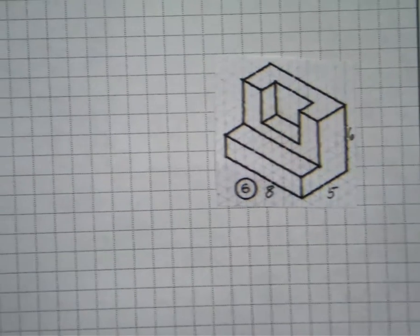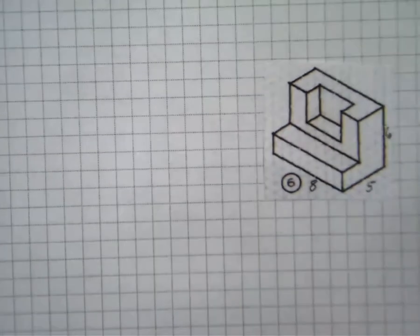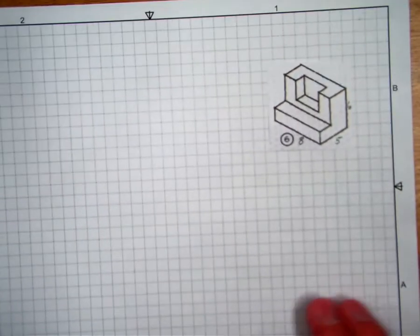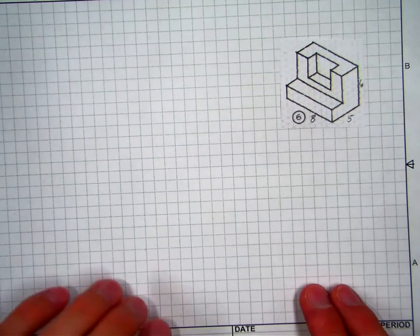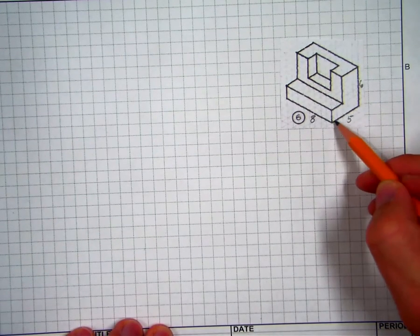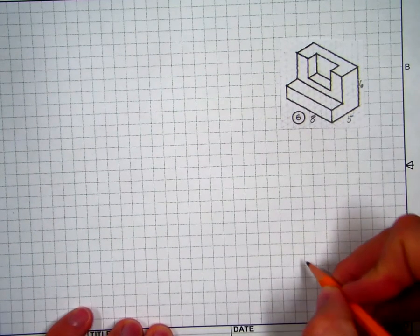Alright, so I'm going to use those units to set up my drawings. And this time I'm going to do, okay, so my right side view is going to be 5 by 6, so I'm actually going to outline that here.